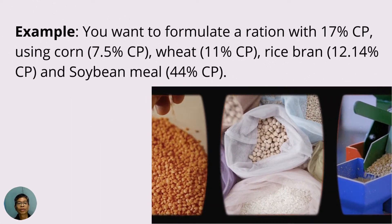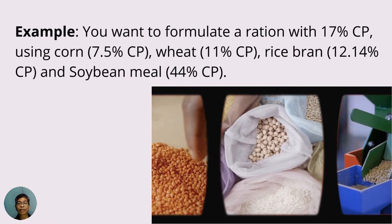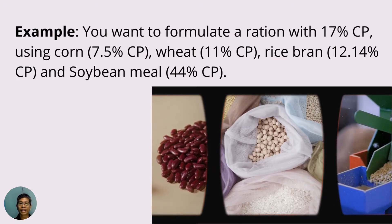For example, you want to formulate a diet with 17% CP using a mixture of corn, wheat, rice bran, and soybean meal.